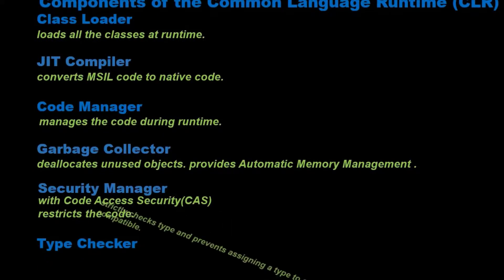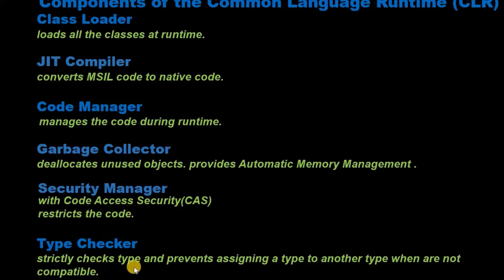Type Checker strictly checks types and prevents assigning a type to another type when they are not compatible. When we declare a variable with one data type, we cannot declare the same variable again with another data type. For example, if we declare variable 'i' with integer data type, we cannot declare the same variable 'i' with string or boolean data type; we must declare another variable like 'z' for that.